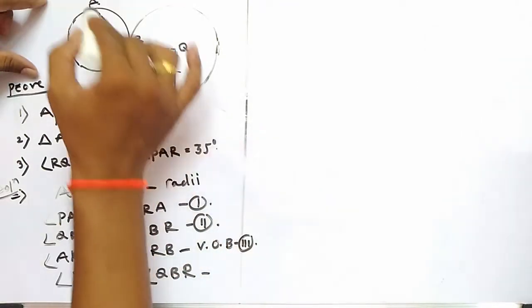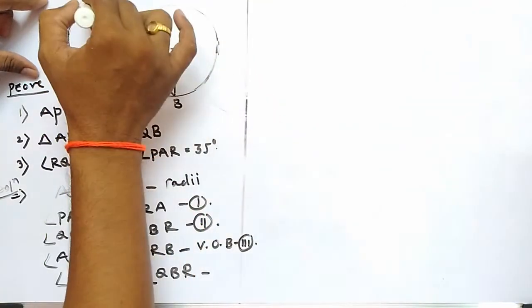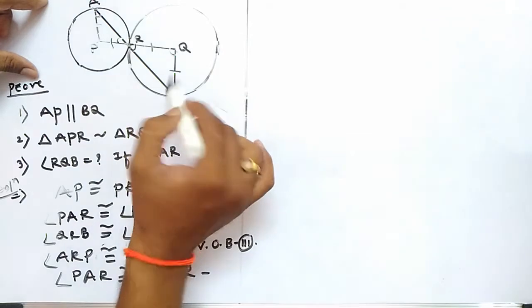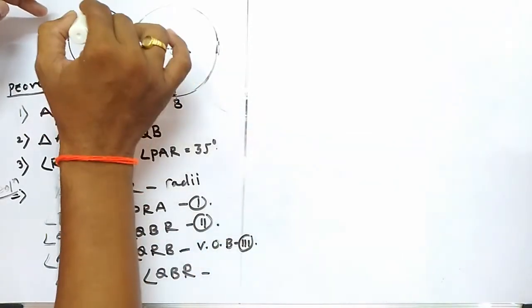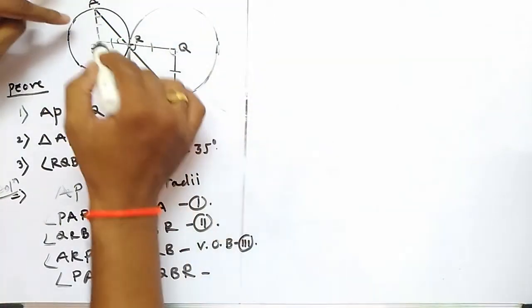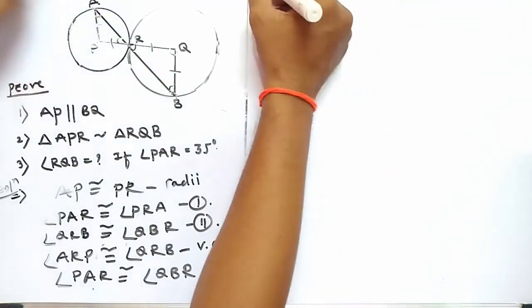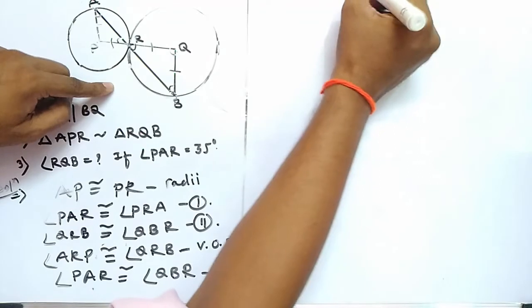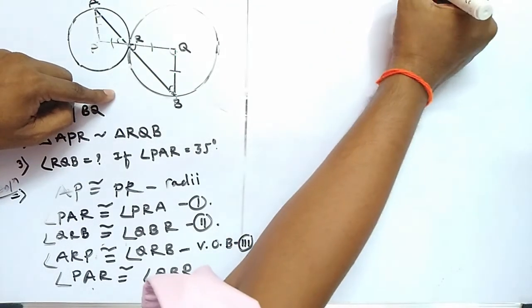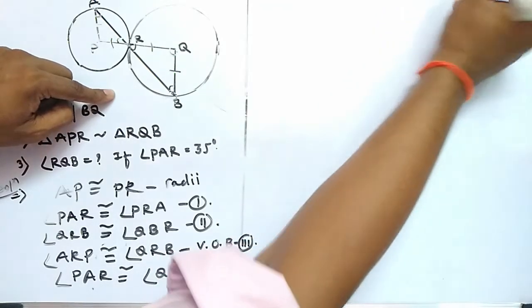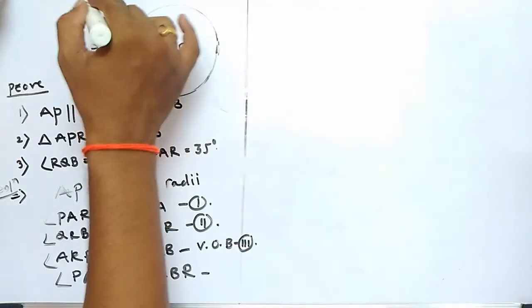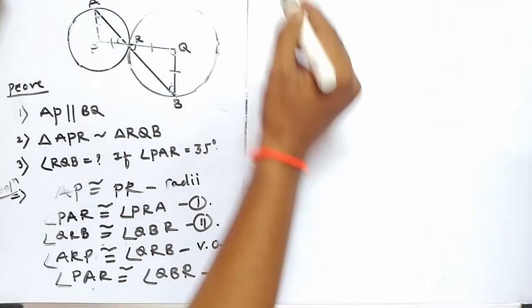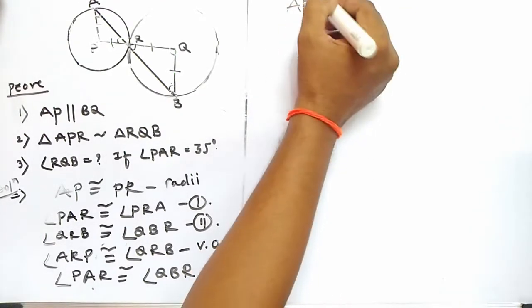Now, in this figure, lines AP and BQ are cut by transversal AB at points A and B respectively. Angle PAB is congruent to angle QBA. Since these are alternate interior angles and they are congruent to each other, by the converse of the alternate angle theorem, we can easily say that line AP is parallel to line BQ.